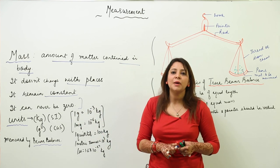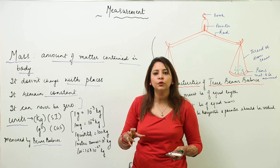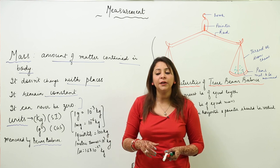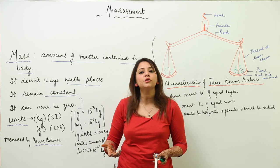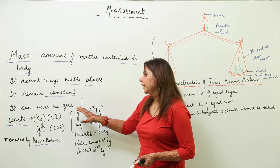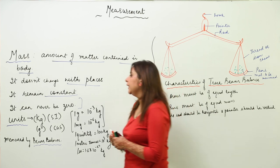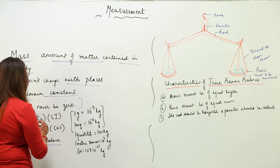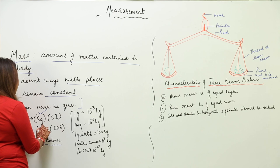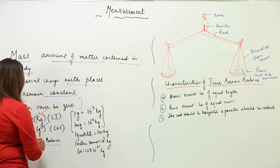Mass can never be zero, because if any body exists it obviously contains a certain amount of matter. Talking about the units of mass, the SI unit is kg and in CGS it is grams. Mass is measured using a balance — specifically a beam balance.